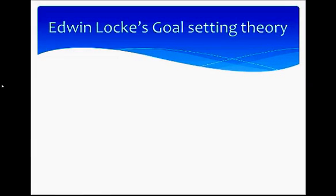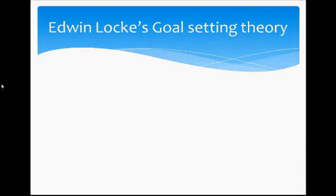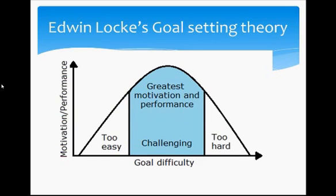Next we move to the process theories of motivation. The first is Edwin Locke's Goal Setting Theory. This theory says that the important motivating factor is the challenging goal — the challenging goal itself can act as a powerful motivator. A challenging goal is one that is neither too easy nor too hard; it is something that can be achieved if you put in a little higher effort. So to motivate people, your goal should be challenging.